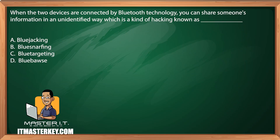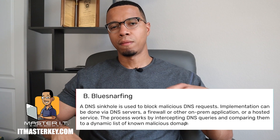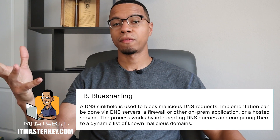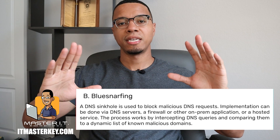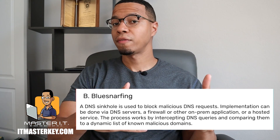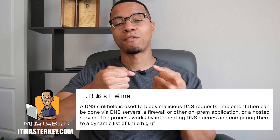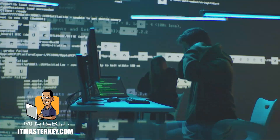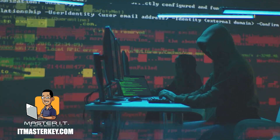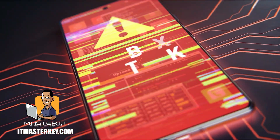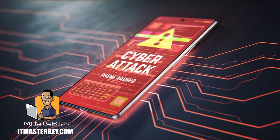When two devices are connected by Bluetooth technology, you can share someone's information in an unidentified way. The major difference between blue jacking and blue snarfing is that in blue jacking you mostly send unwanted messages to a user. Blue snarfing takes that a step further — it actually tries to steal information or data from the device using Bluetooth. Blue snarfing is a technique employed by hackers to steal data or sensitive information from Bluetooth-connected devices. This approach is common to desktops, mobile computers, smartphones, tablets, and personal digital assistants (PDAs).